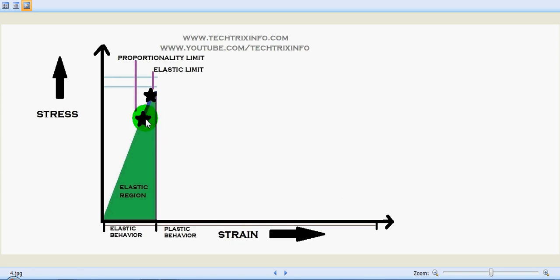So this point is the proportionality limit. That means beyond this limit, stress and strain will be acting in a non-linear way. And this is the elastic limit. From till this point the body can come back towards its original shape even though a deformation has happened. That means when the load is removed, the body can come back to its original shape.